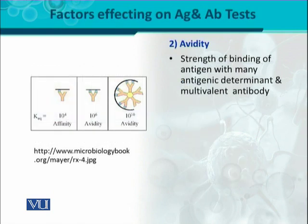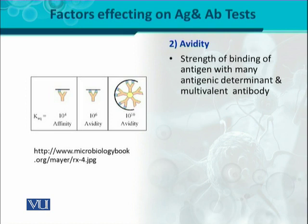Another important factor is avidity. Avidity is the strength of binding of antigen with many antigenic determinants and multivalent antibodies. Affinity میں ہم single antigenic determinant اور single antibody binding site کی بات کر رہے تھے — on the other hand, avidity is the strength of binding between multiple antigenic determinants. اگر ایک antigen کے اوپر بہت سے antigenic determinants اور epitopes ہیں اور antibody پہ بھی corresponding different binding sites ہیں تو they would bind together and the interaction would become more stable. This phenomenon is called avidity.